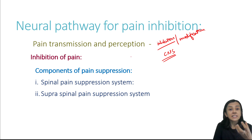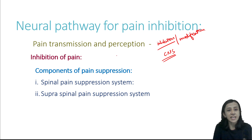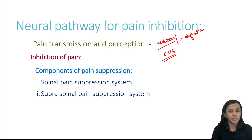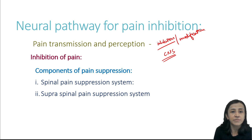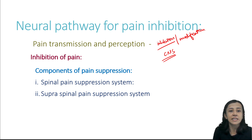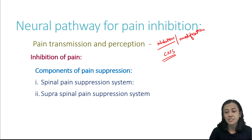The degree of reaction to painful stimulus is different in different individuals, and it varies from one individual to another. There are two components of the pain suppression system: the spinal pain suppression system, which is present in the spinal cord, and the supraspinal pain suppression system.